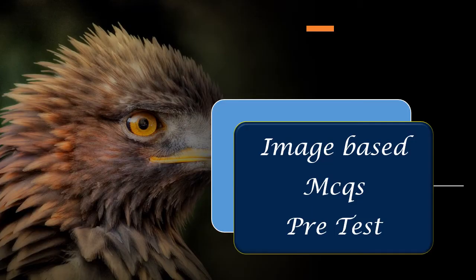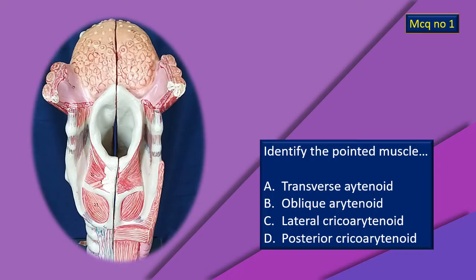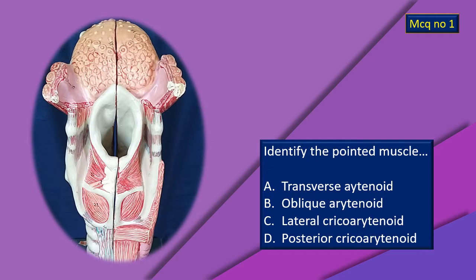Let's take a quick look at some image-based MCQs. Concentrate on the details — this will help you in spotters. Here is a model of the larynx in posterior view. There is a blinking arrow pointing to a muscle. What is that muscle? There are four options. Think it over and give your answer. All the answers are discussed at the end of this video.